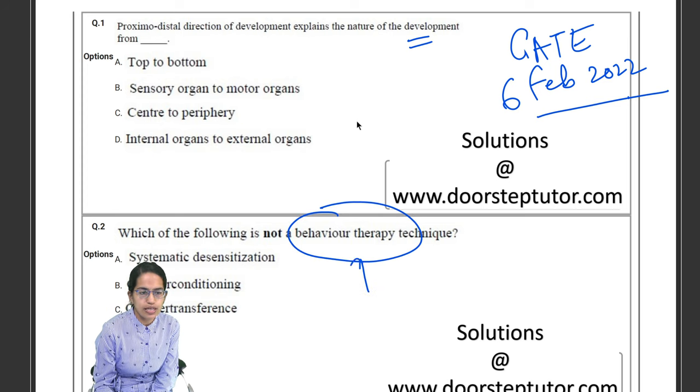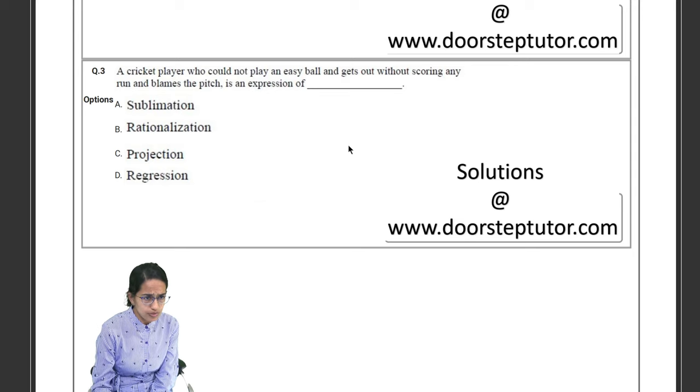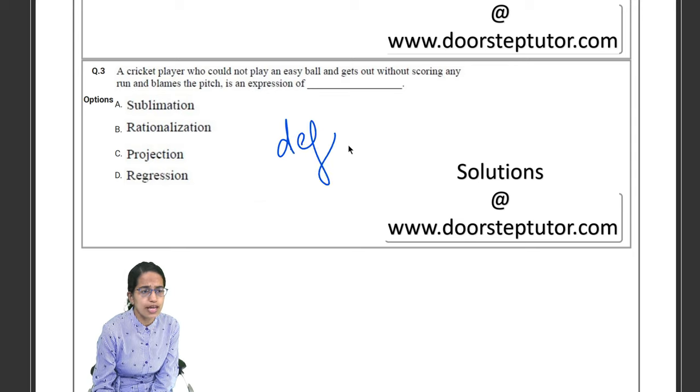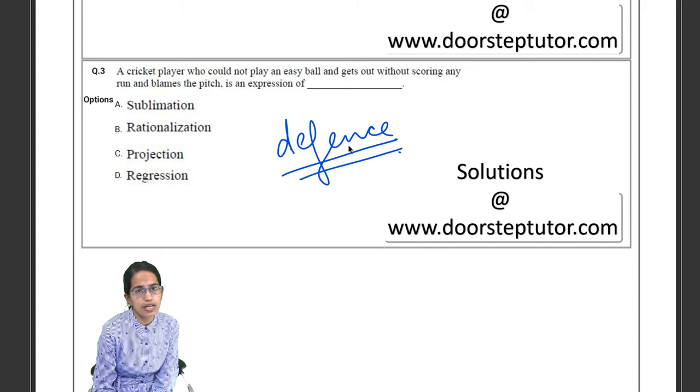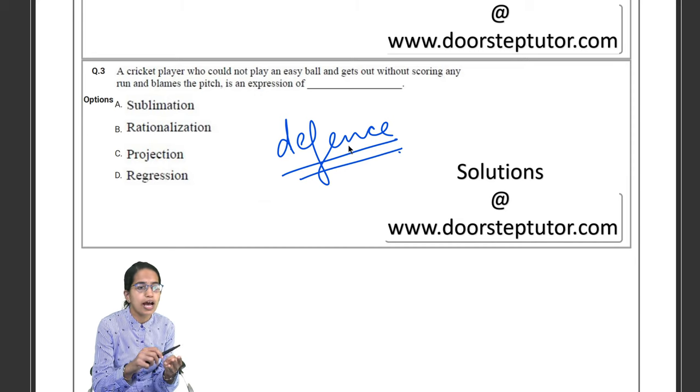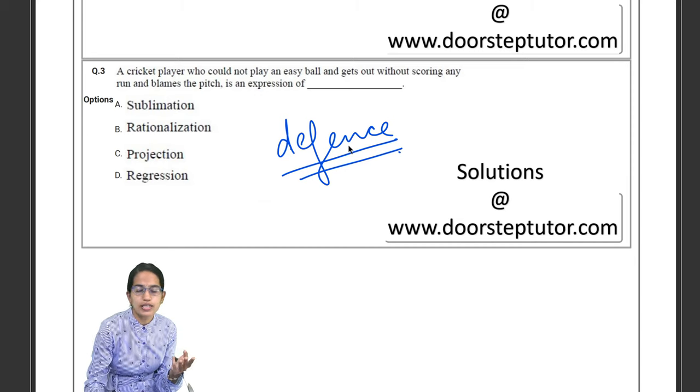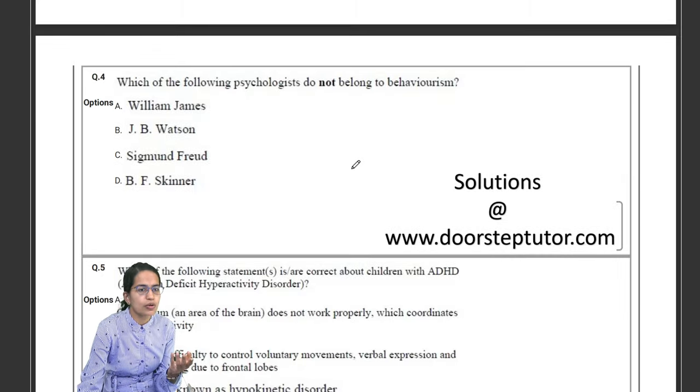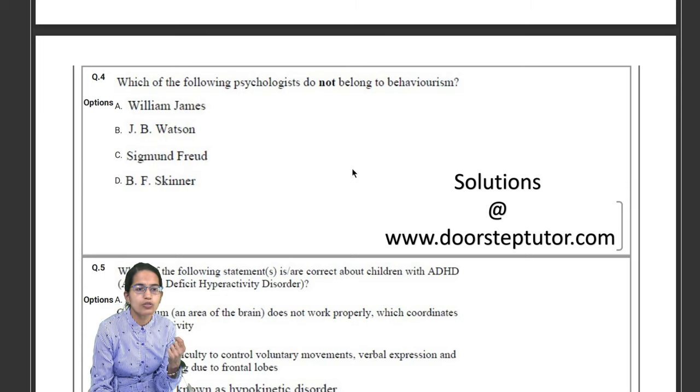Which of the following is not part of behavior therapy? Again, this is covered elaborately in our video lectures. Going on to this is a question from defense mechanism. Now you must be well aware about the three categories of defense mechanism: the aggressive, the withdrawal, and the compromise reaction.